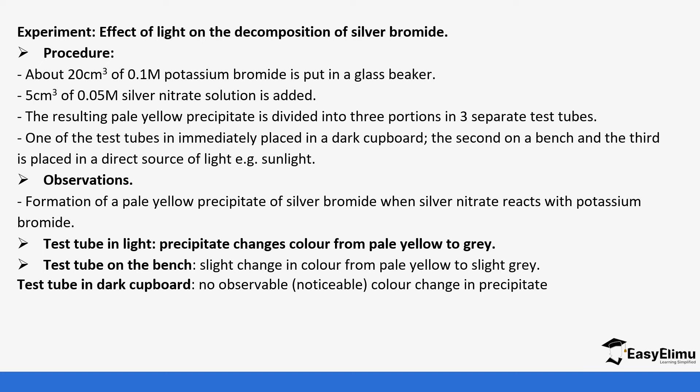The test tube in the light, the precipitate changes its color from pale yellow to gray. The one on the bench changes from pale yellow to slight gray but the one in the dark doesn't change color at all. The pale yellow solid that is formed is because of the production of silver bromide.